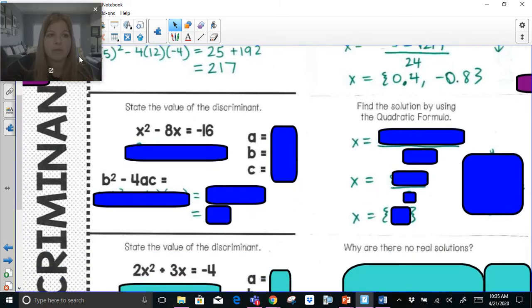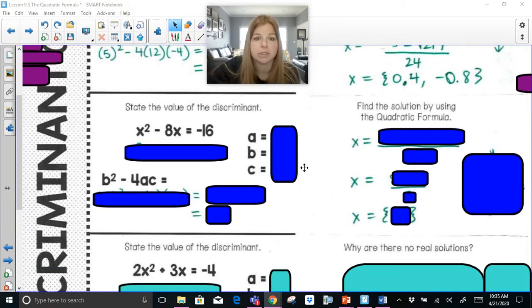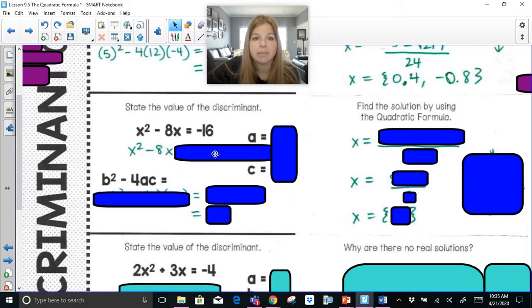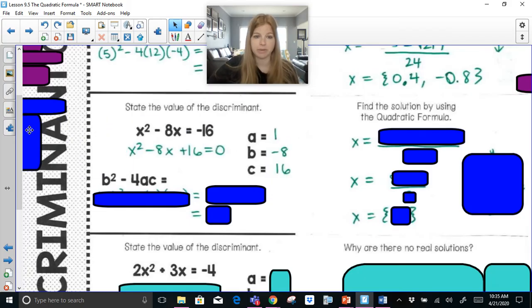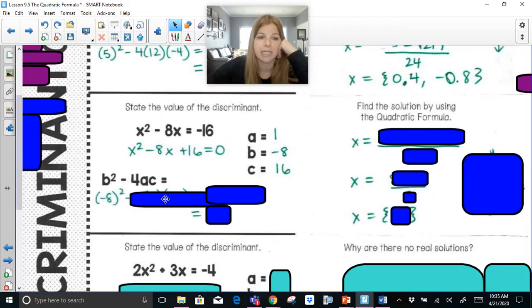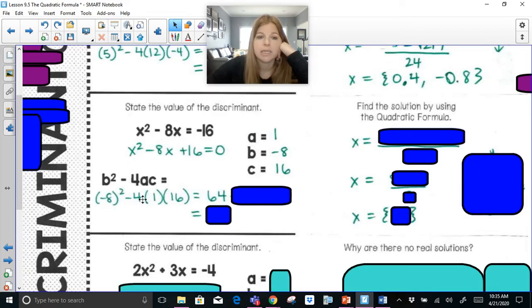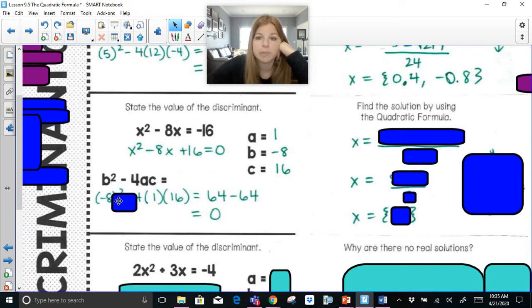The second problem is an example where we're going to have just one solution. Setting this equation equal to 0, we get x squared minus 8x plus 16 equals 0. I can then see my a is 1, b is negative 8, c is 16. Substituting in to get b squared minus 4ac: negative 8 squared minus 4 times 1 times 16. Negative 8 squared is 64, negative 4 times 1 times 16 is negative 64, which becomes 0.